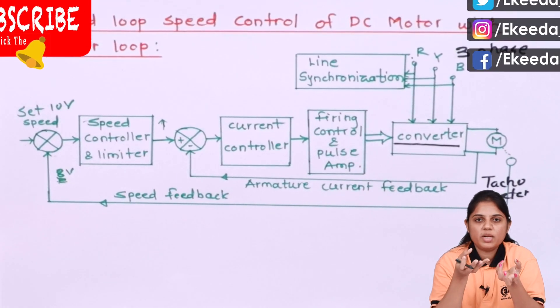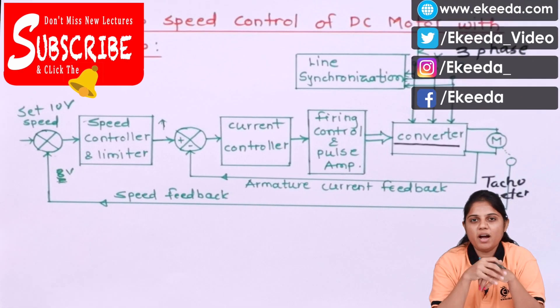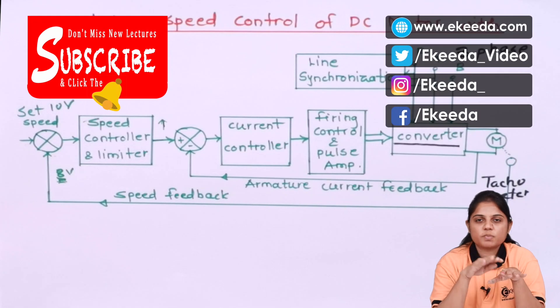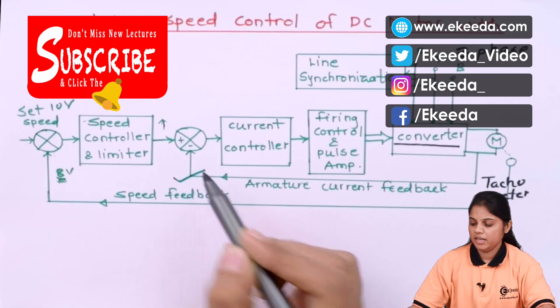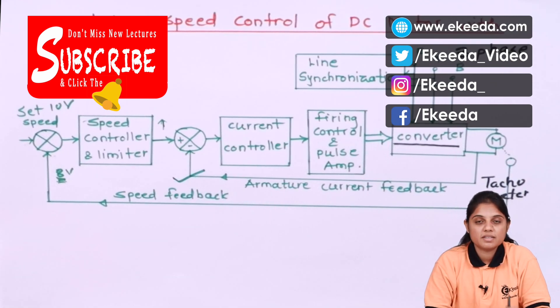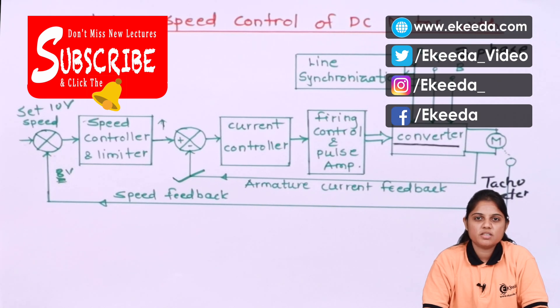So that means here because of having the armature current feedback, your wrong actions will be avoided basically and your speed will be maintained for that particular motor. That is the use of the inner control loop. That is the necessity of having the inner control loop. Thank you for watching this video. Stay tuned to Ikeda. Do subscribe to Ikeda. Thank you so much.